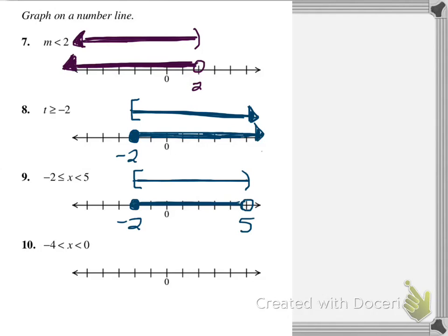One more: numbers between negative 4 and 0. We want less than 0, so that's an open circle at 0, and greater than negative 4, which is also an open circle. We shade in between. Using parenthesis notation, we'd use open parentheses on both ends shaded in between. Graphing is just a visual representation of all the solutions.